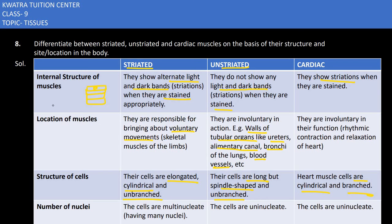Regarding the number of nuclei: striated muscles are multinucleate, meaning many nuclei are present in one cell. Unstriated muscles are uninucleate. Cardiac muscles are also uninucleate, meaning a single nucleus is present in one muscle cell.